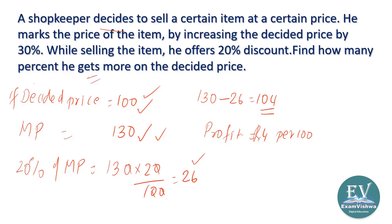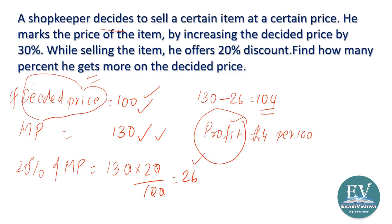How many percent he gets more on the decided price — that is what was asked. The percent more is nothing but his profit. The decided price is his original cost price. By simply considering 100 as the decided price, we could find that 4 percent profit is what he is getting.